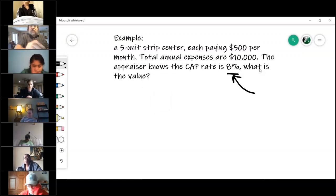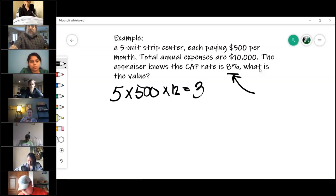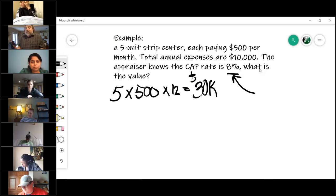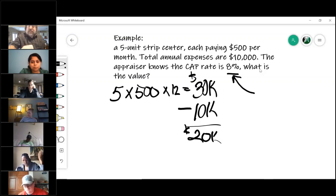So what's the gross income? Five units times five hundred dollars per month times twelve months. If I've done my math right, thirty thousand dollars. That is the gross operating income. But I need the net. How do I get to the net operating income? I subtract the expenses that I told you were ten thousand dollars on an annual basis, so you end up with twenty thousand dollars in net operating income.